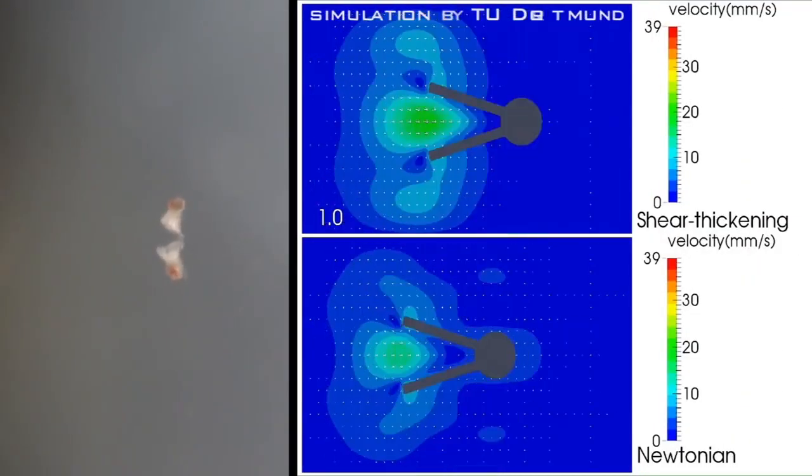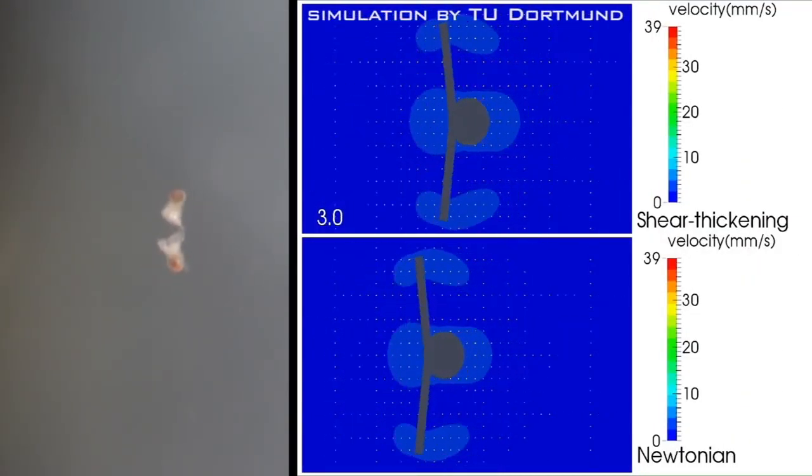It's best to think of the scallop stroke as being divided into two phases. You have a rapid closing phase and a slow opening phase and because the shells of the scallop are moving together very quickly during the closing phase, the viscosity within the shell because we're using a shear thickening fluid in this case is very large.